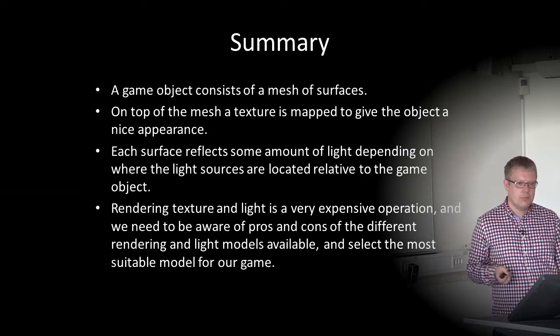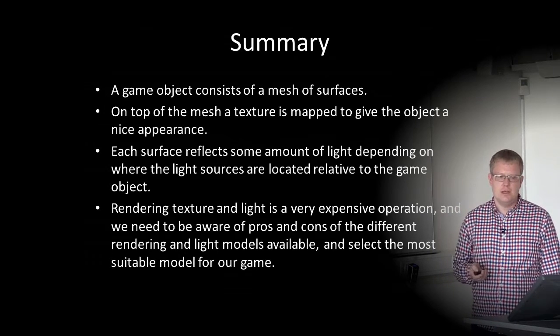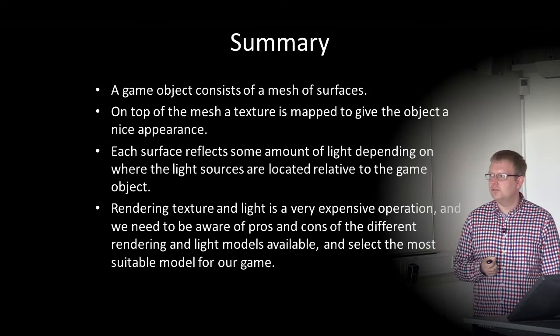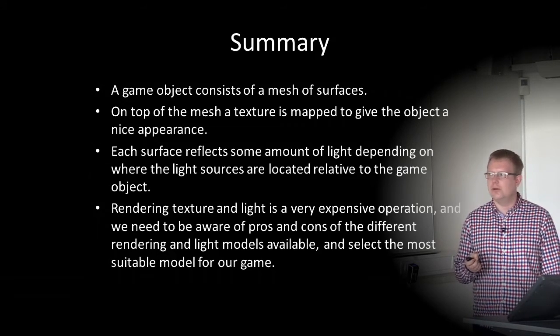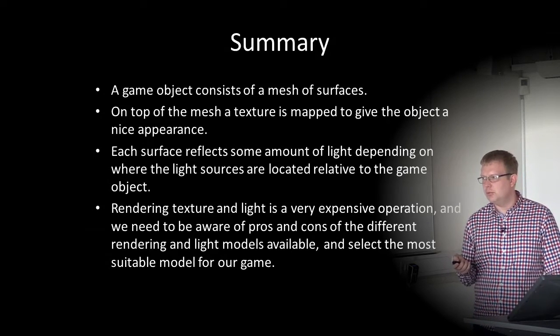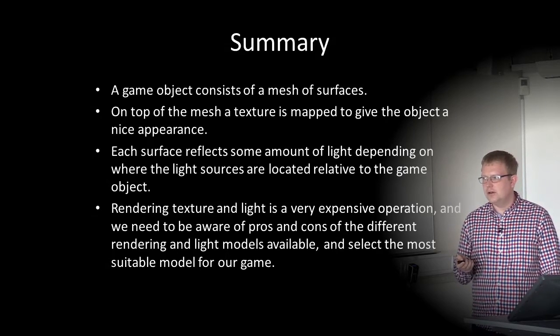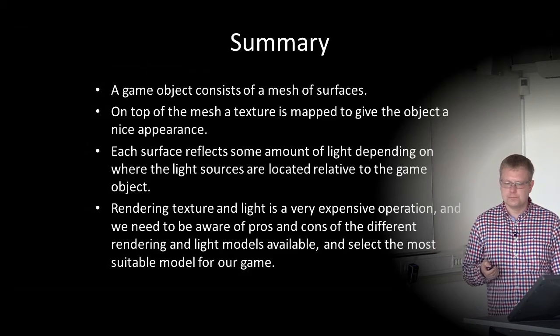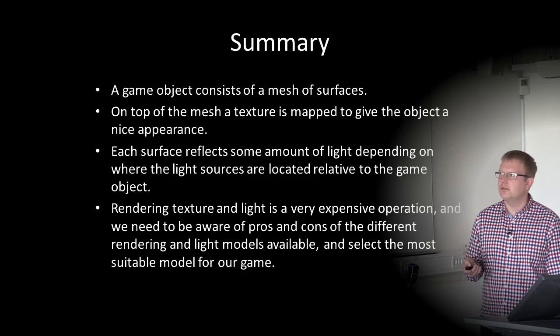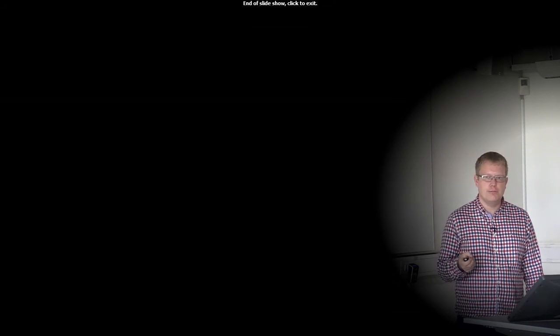To summarize today's lecture: a game object consists of a mesh of surfaces; on top of the mesh, a texture is mapped to give the object a nice appearance; and each surface reflects some amount of light depending on where the light sources are located relative to the game object. Rendering, textures, and lighting are very expensive operations, and we need to be aware of the pros and cons of different rendering and lighting models, select the most suitable for our games, and try to optimize them as much as possible. That's all for this lecture — the fourth lecture in Introduction to Game Programming 1DV437. My name is Johan Hagelbeck. Thanks for listening.